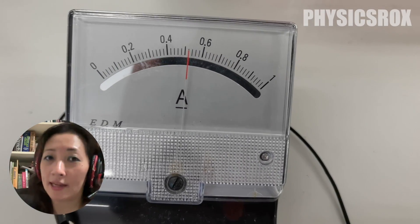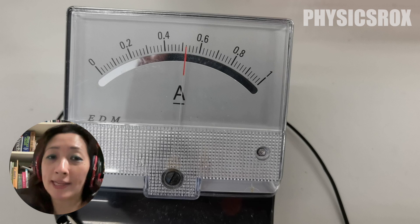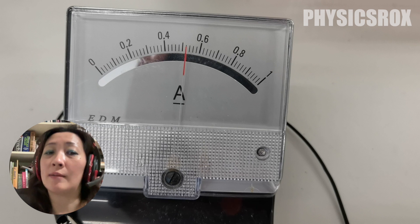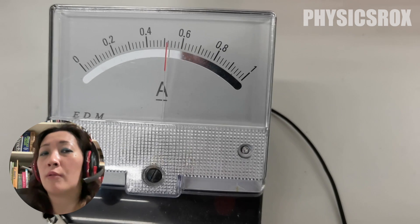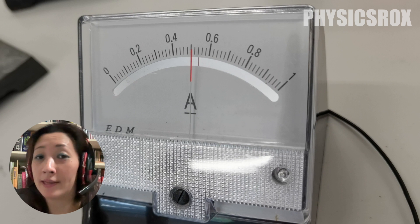As you can see, when we position our eye correctly so that the pointer overlaps its own reflection in the mirror, at this angle this is the most correct position of the eye to take the reading. You can see the ammeter reading is 0.52 amperes. Now if we were to look at the scale from this angle,